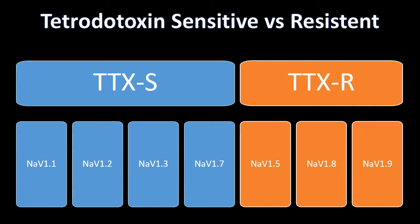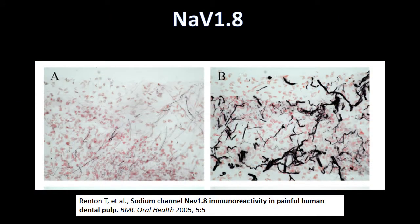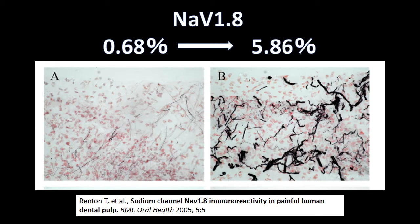Normally, TTXS channels are distributed throughout the peripheral nerves, but when peripheral sensitization occurs, TTXR sodium channels are upregulated — especially the channel called sodium channel voltage 1.8. These two figures compare the density of sodium channel voltage 1.8. Figure A is of a healthy pulpal tissue and Figure B is of pulpal tissue with irreversible pulpitis. Notice the amount of areas with black stain on the right, representing sodium channel voltage 1.8, which is upregulated up to about 8 times compared to the healthy tissue.